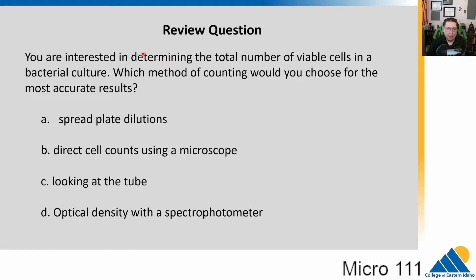Is it A, spread plate dilution? B, direct cell counts using a microscope? C, just looking at the tube? Or D, optical density with a spectrophotometer? Go ahead and pause the video and think about that one.